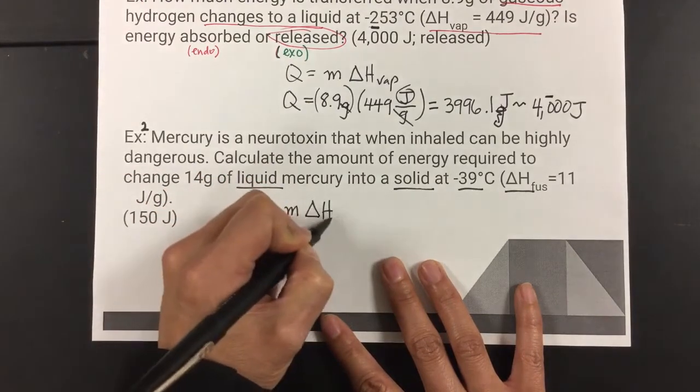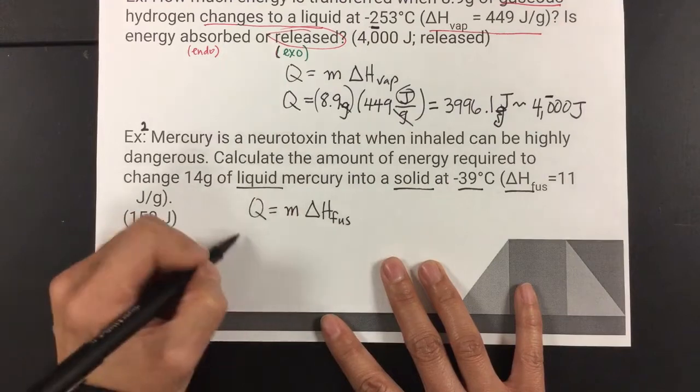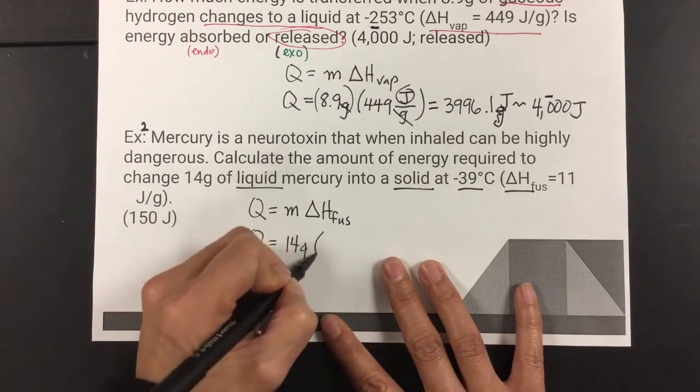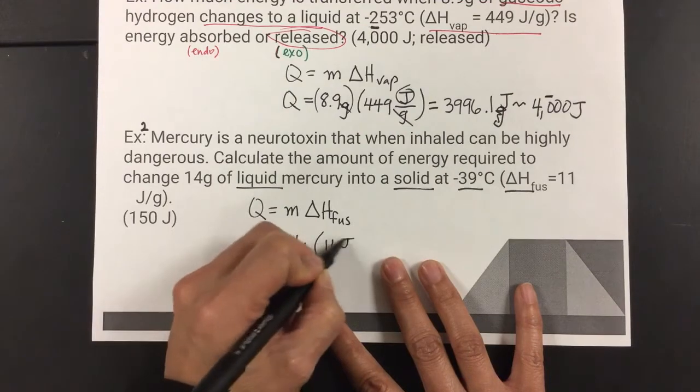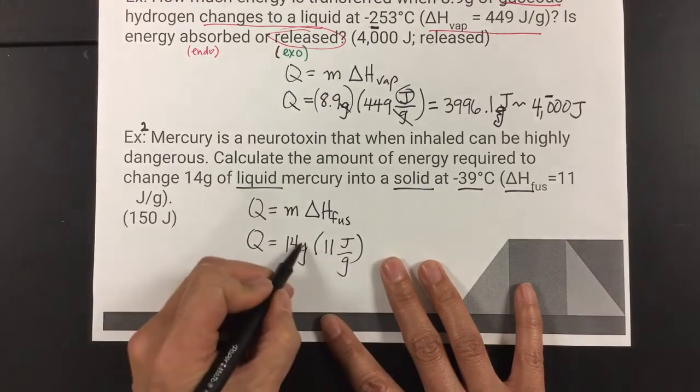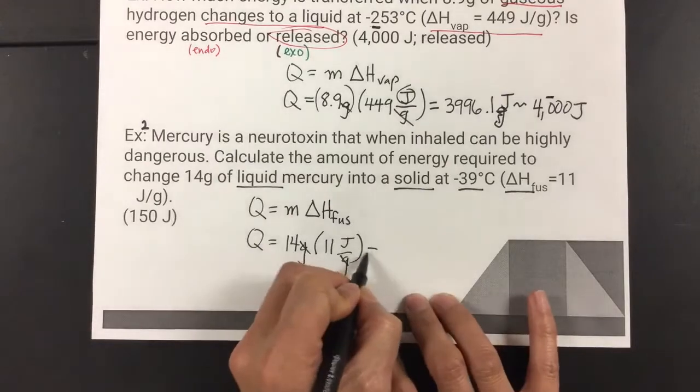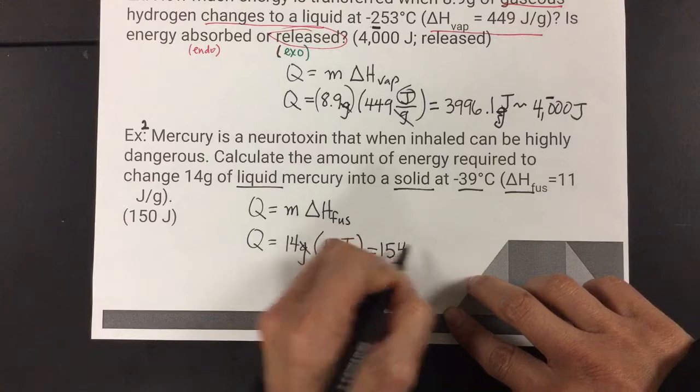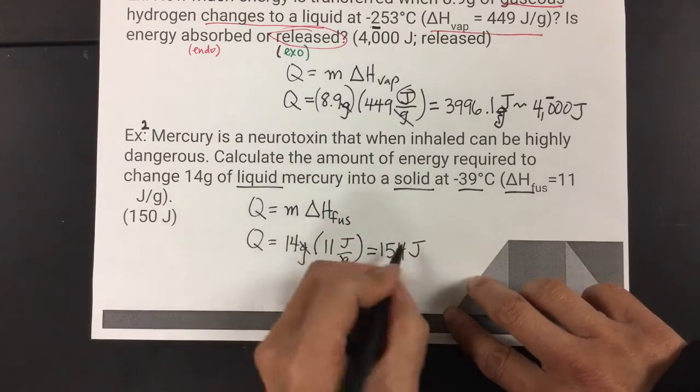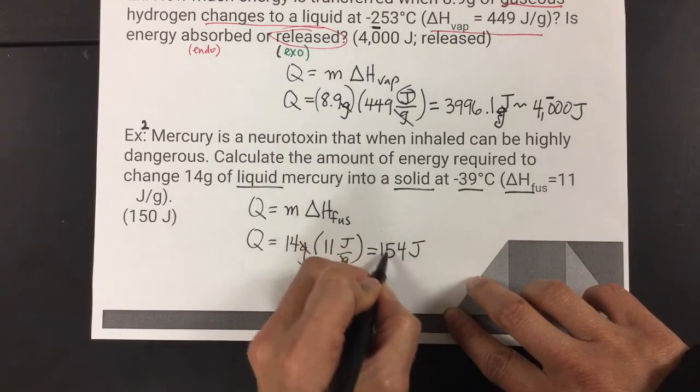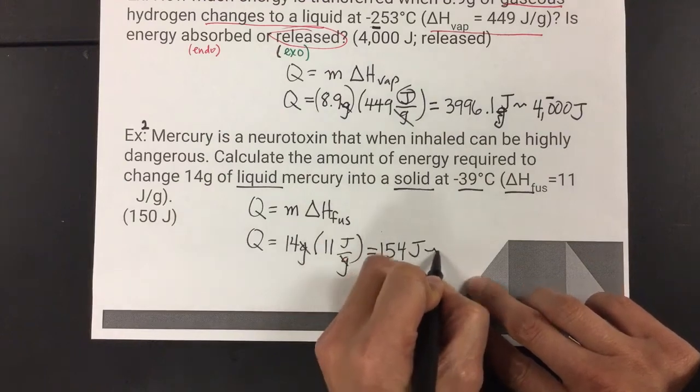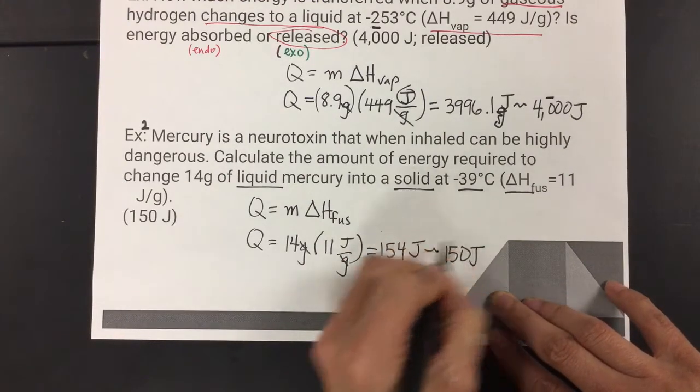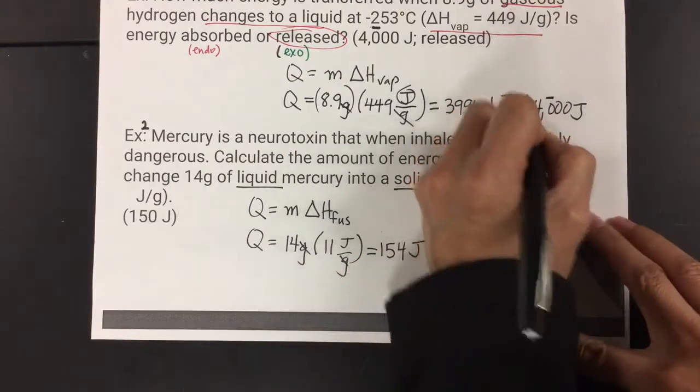So, now we're going to use fusion. So, Q equals mass, 14 grams, times it by your ΔH fusion, which is 11 joules per gram. When you multiply these two, you will get what value? I get 154 joules. But, sig figging it, here's my first sig fig. Here's my second sig fig. So, my number is going to be rounded to 150 joules in the end. Okay. I'll box my answers.